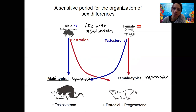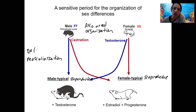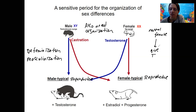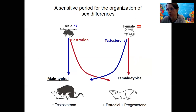The activation hormones are also necessary — you're acting on a system already set up. To have male-typical behavior, you need both masculinization and defeminization. If you have a normal female and just give testosterone in adulthood, she has not been defeminized, so she will not show high levels of male sex behavior. It's more nuanced than just the circulating hormone.